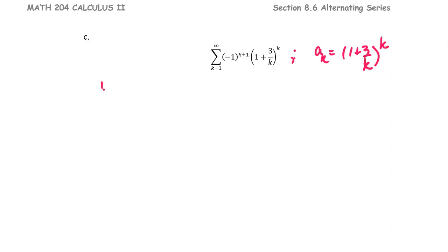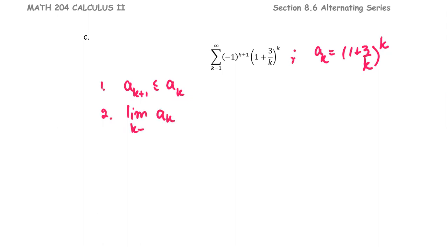To check the conditions of the alternating series test: number 1, ak plus 1 is less than or equal to ak for some index k; and number 2, the limit of ak as k approaches infinity equals 0.